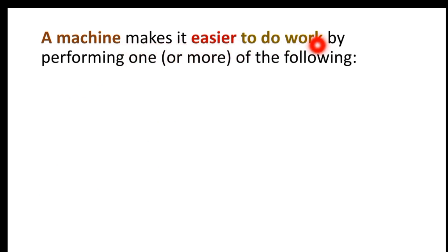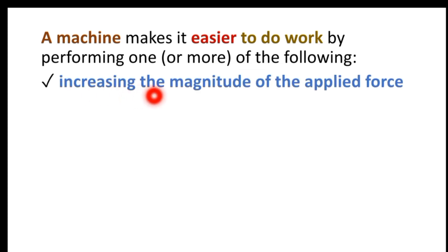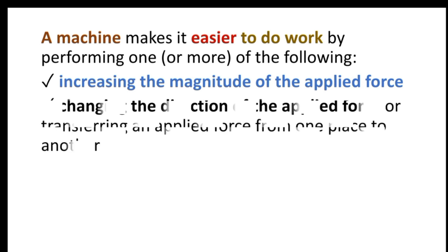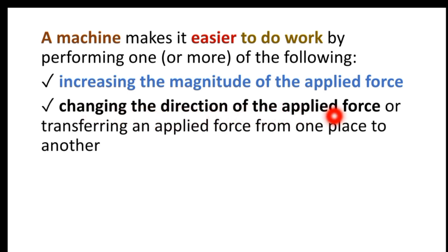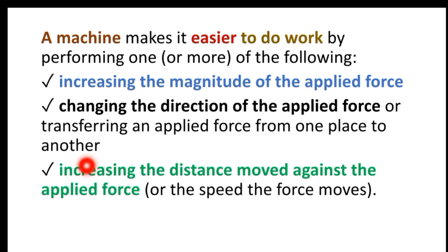A machine makes it easier to do work by performing one or more of the following: increasing the magnitude of the applied force, changing the direction of the applied force, transferring an applied force from one place to another, increasing the distance moved against the applied force, or increasing the speed the force moves.